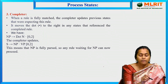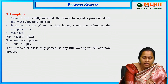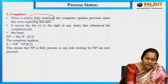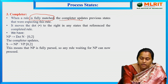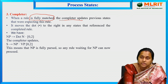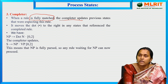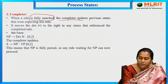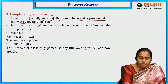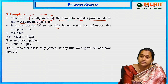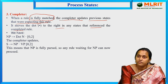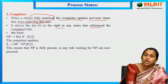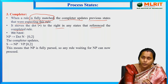The third process state is the Completer. When the rule is fully matched, then only it will satisfy the condition - it forms a complete sentence. The Completer updates the previous states that were expecting this rule. It moves the dot to the right for any state that references the completed rule, and the process repeats until the final sentence is fully matched.